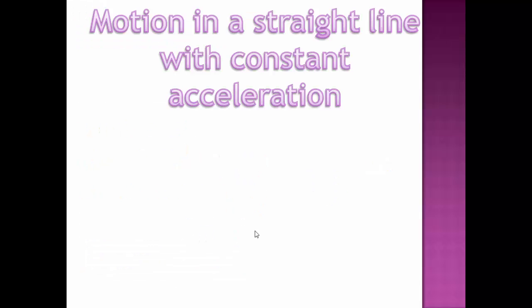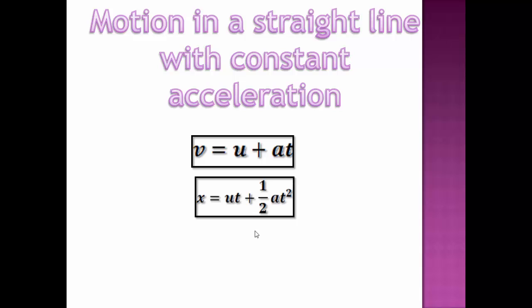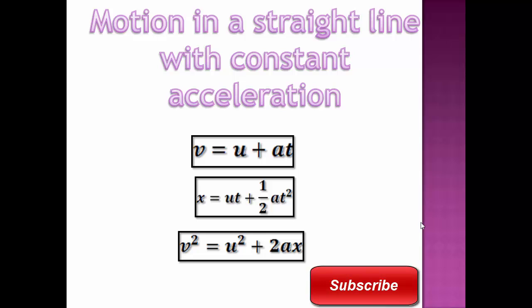For motion in a straight line with constant acceleration we derive the three expressions: v equals to u plus a t, x equals to ut plus half a t square, and v square equals to u square plus 2 a x. These equations are very important and are widely used in solving numericals or deriving expressions for motion of particle in two dimensions and three dimensions. So practice as many questions as you can to memorize these equations and to understand their application completely.